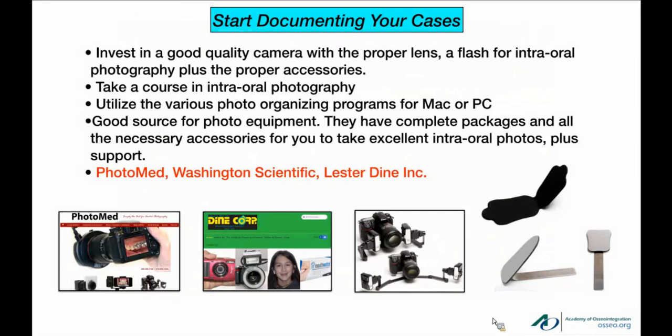Most importantly, you have to get a decent camera. What I call 'Frankenstein cameras' — where you have a body and go buy your own lens and flash — I really don't recommend that. There are companies that sell complete packages: Fotomed, Washington Scientific, Lester Dine, to name a few. Fotomed is a supporter of the AO and always has a nice booth at every meeting. Their packages include mirrors, contrasters, and lenses already set up — they make it very easy. You don't have to worry about producing photographs like they'd be published in a journal.